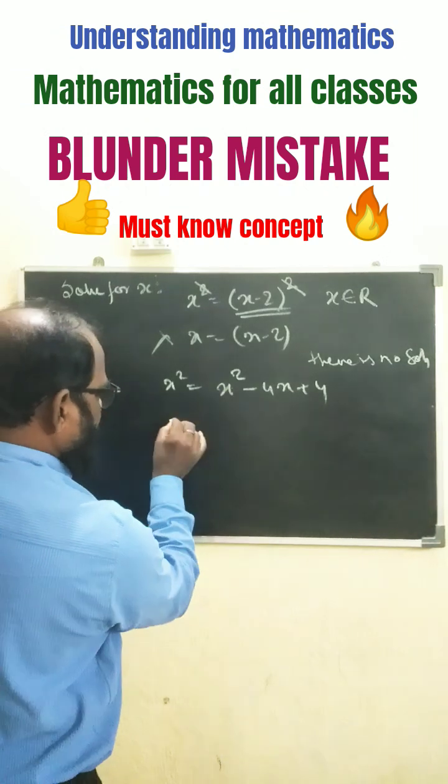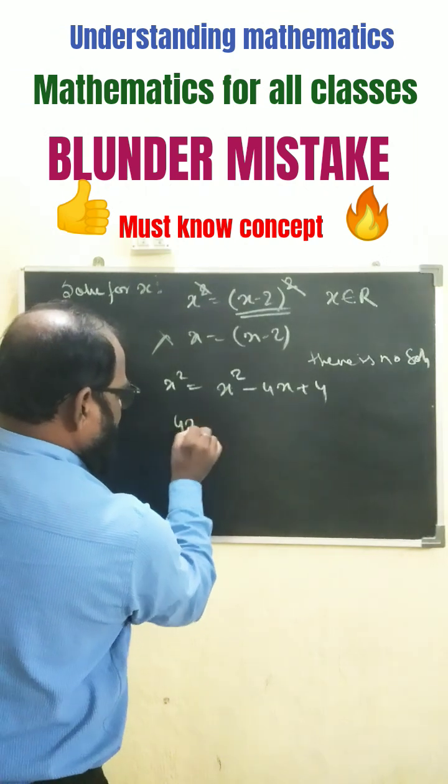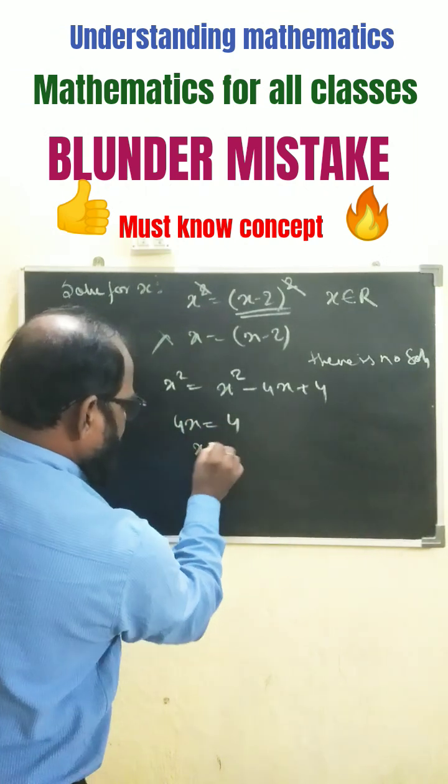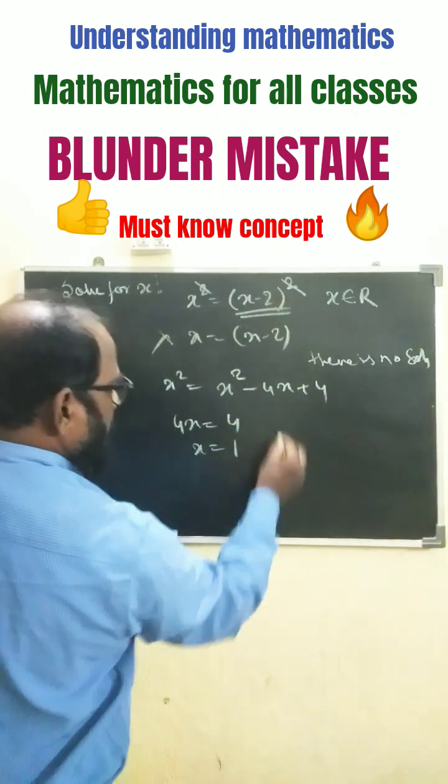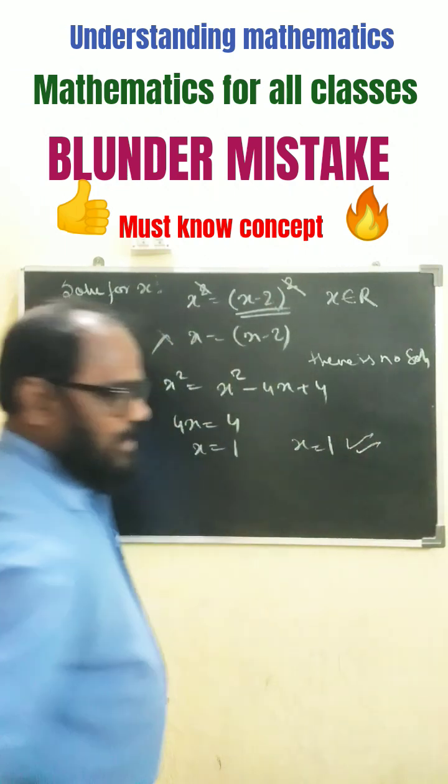Then we get here, we know this becomes 0, 4x equals to 4, x equals to 1. So the solution is x equals to 1, this is the right answer.